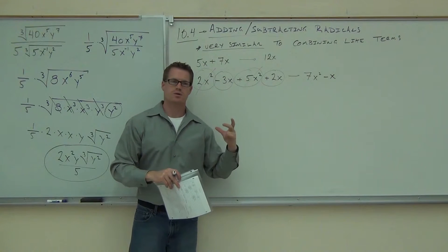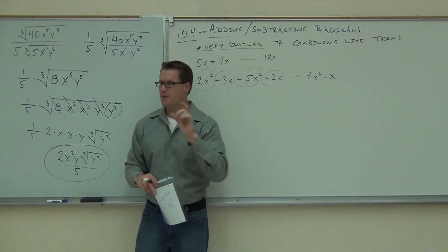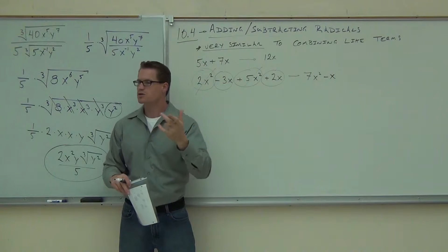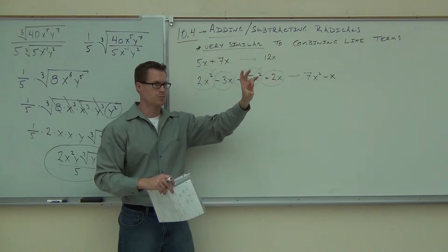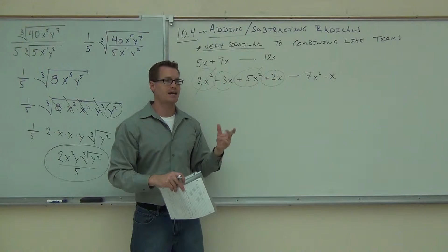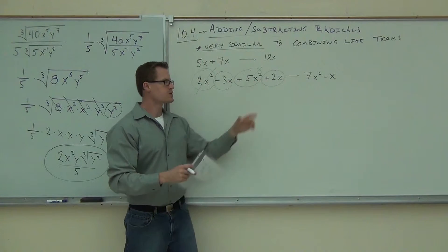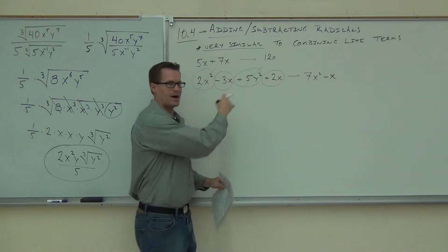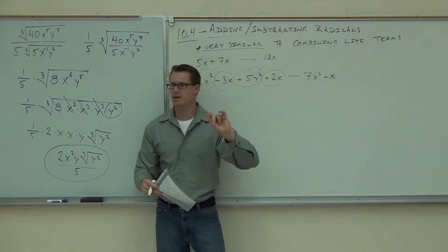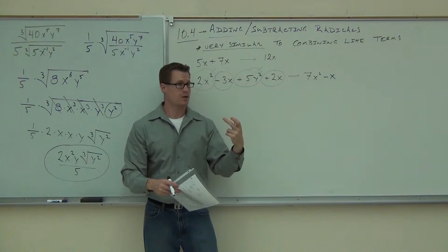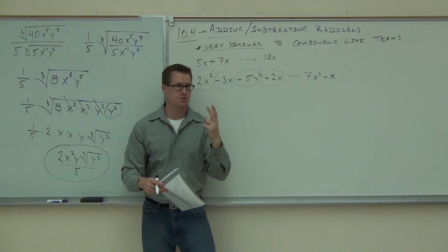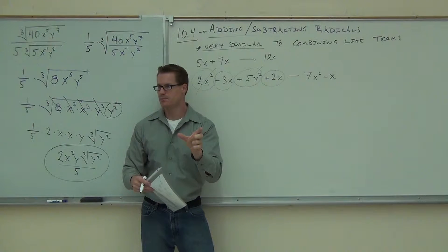In radicals, we're not just looking for the same exact root — that would be the same exponent. Radicals are exponents. So you are looking for the same exponent: square root with square root, cube root with cube root. But also, you're looking for the same exact base — that's like the same variable. The inside of the radical — the radicand — must be identical for you to add or subtract them. You have to have two things exactly the same: same root, same radicand. Remember that.